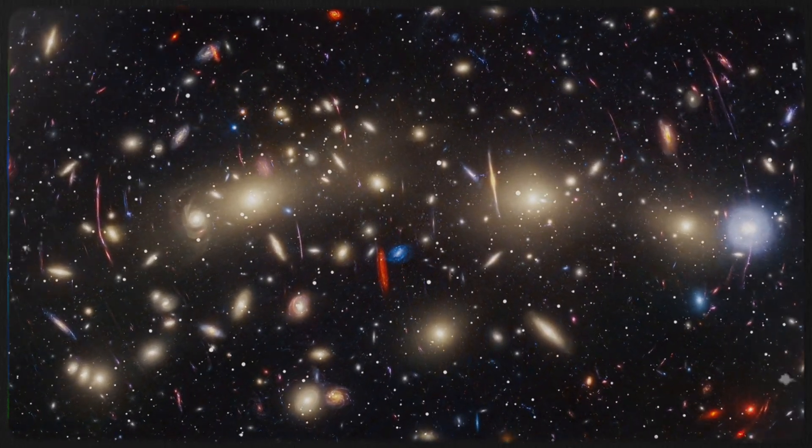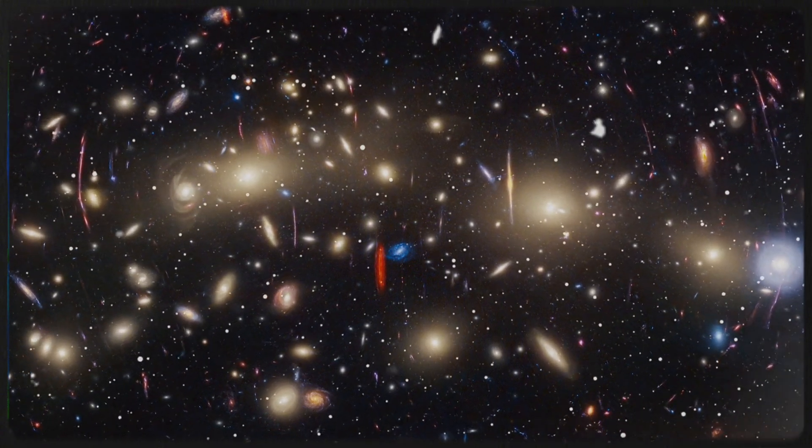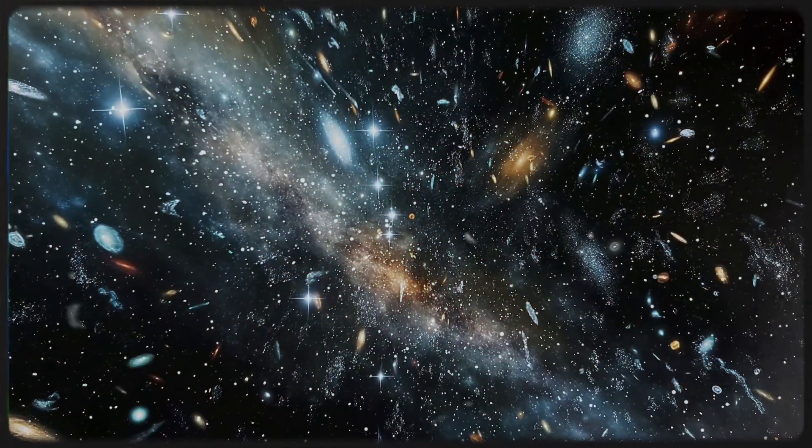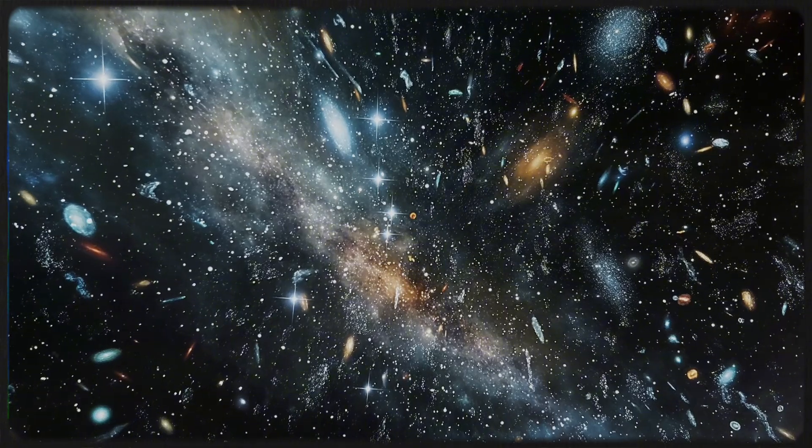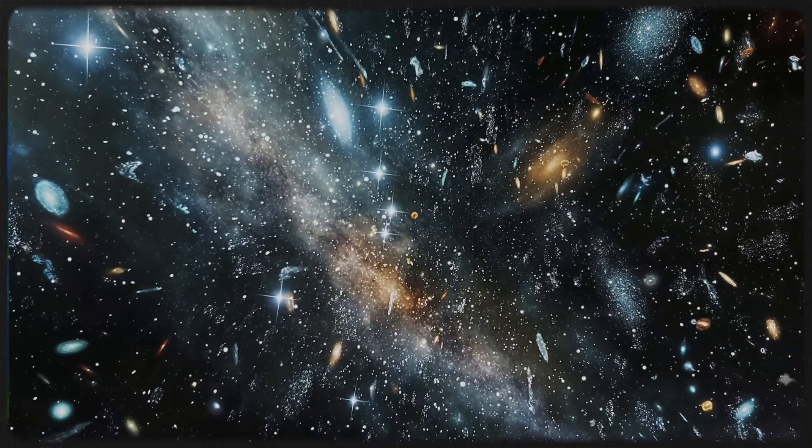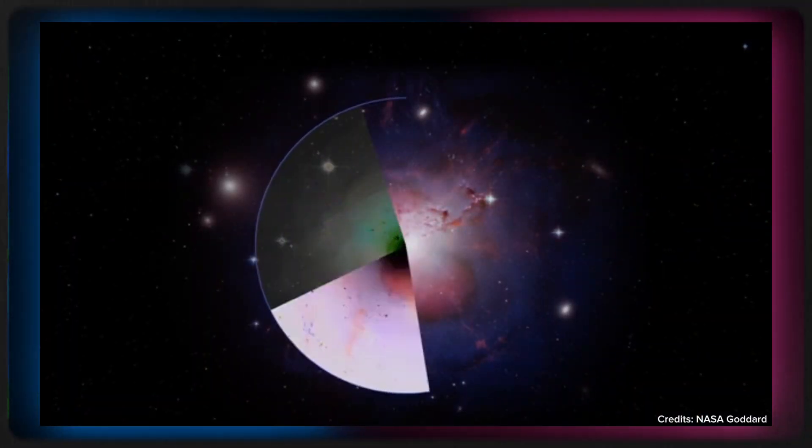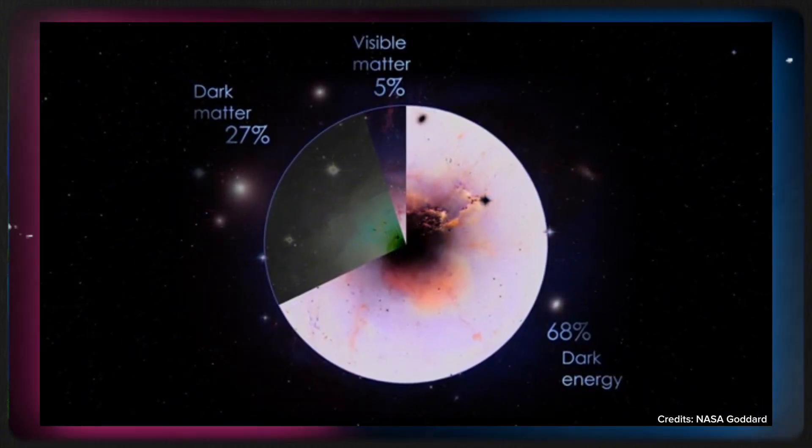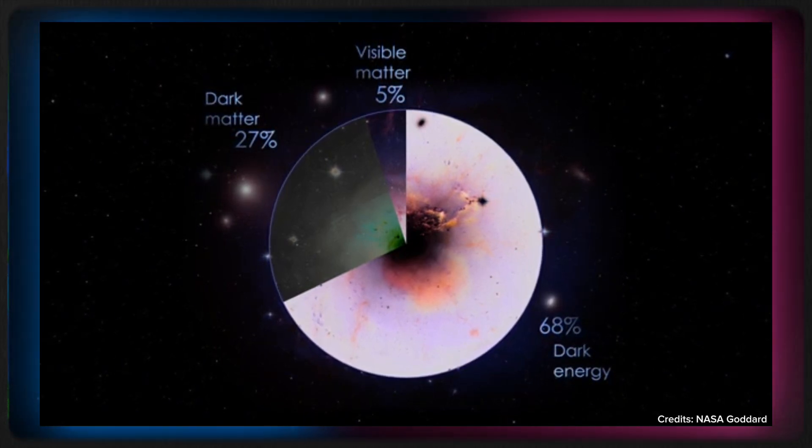Webb reinforced the conclusion that the universe is expanding at a pace about 8% faster than what earlier models had suggested. This seemingly small discrepancy, however, is anything but trivial. It points to a profound mystery, one that challenges our most fundamental understanding of the cosmos. Instead of being attributed to simple measurement errors or discrepancies in data, this difference hints at a deeper issue in our cosmological models. It suggests the possible existence of a missing element or force that has been eluding scientists' grasp for years, one that could reshape our entire understanding of the universe's evolution and its underlying physics.